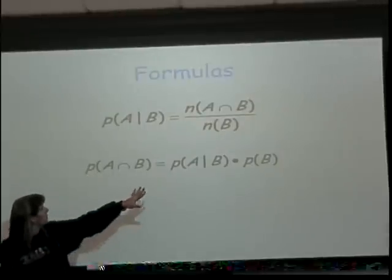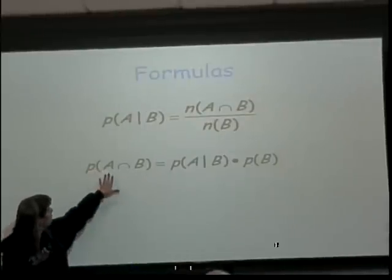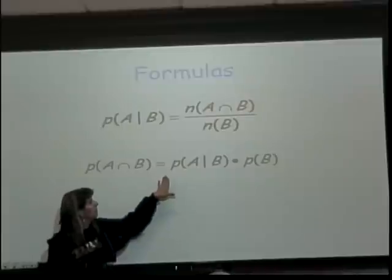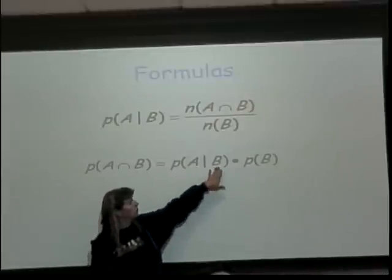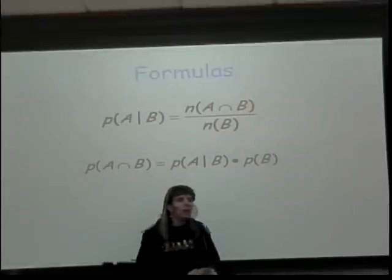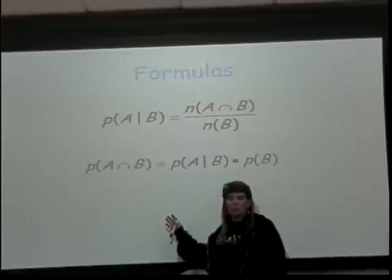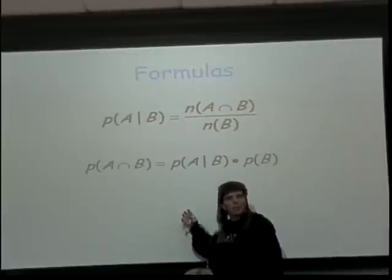And then you can rewrite this as the probability of A and B happening at the same time as the probability of B times the probability of A given B. But as I said, these formulas are nice, but for the most part, I don't do a single problem where you need them.